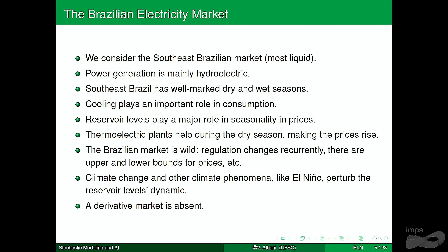When we look at a real problem with real data, we have to incorporate that prices can be influenced by climate and by other issues like economic variations. The way that it influences the price is difficult to model. But if you choose a good artificial neural network model, it can help to make this mapping from covariates to prices easier.